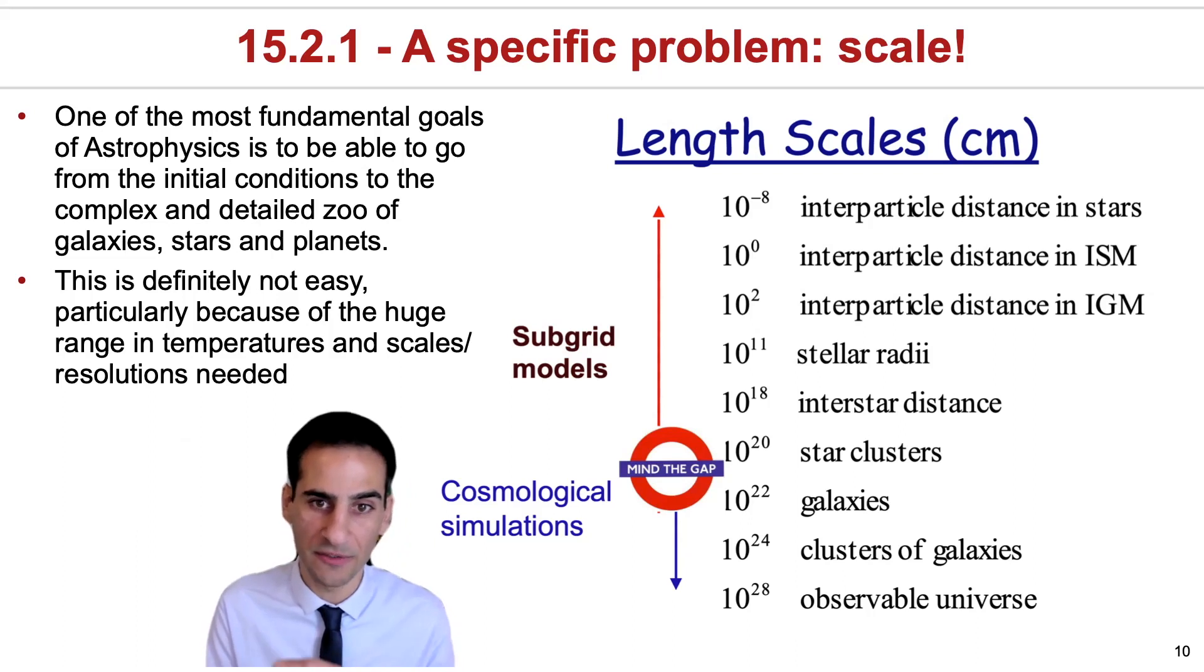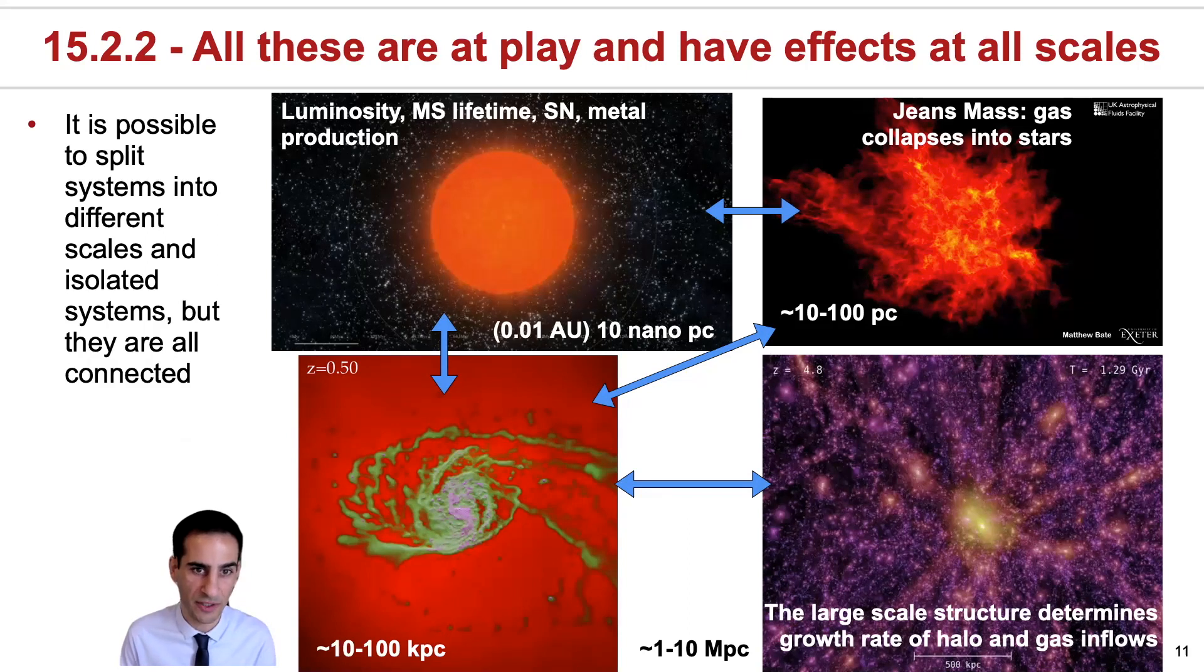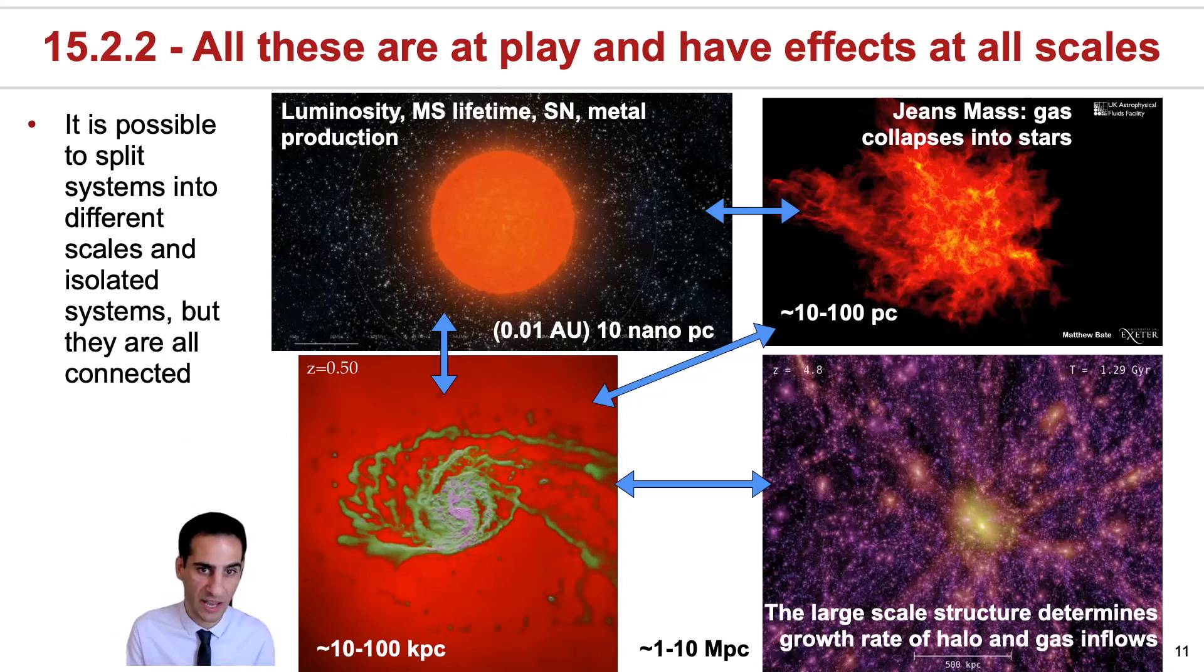In physics, many problems can actually just be split apart and they're actually linear. It means that you could just take one component, study it individually, take another component and another component, and when you put them together you can look at how they work. However, for the universe, this really does not work at all, and specifically because galaxies are very non-linear. This means that the processes happening at different scales are actually communicating with each other and you can't really make them independent.